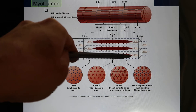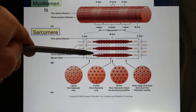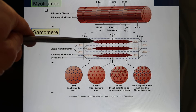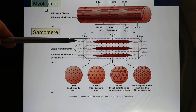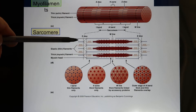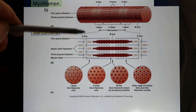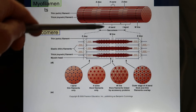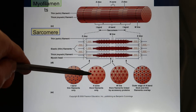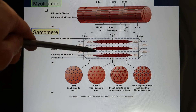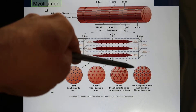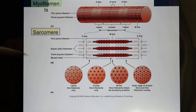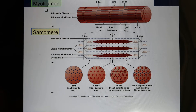The region that looks dark is the A-band, and the region that looks light is the I-band. If you cut the I-band, you see thin filaments only. If you cut the H-zone, you see thick filaments only. If you cut the A-band, most of the time you'll see both thick and thin filaments, because it's an overlapping model.